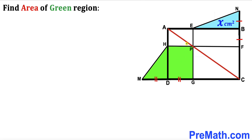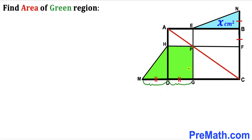Welcome to pre-math. In this video we have a rectangle ABCD along with diagonal AC that passes through point P. We also have triangle EBN such that side length NB equals FB. The area of the blue triangle is X centimeter square. We also have green triangle MDH such that side length MD equals DG. Our task is to calculate the area of the green shaded region — these two areas combined.